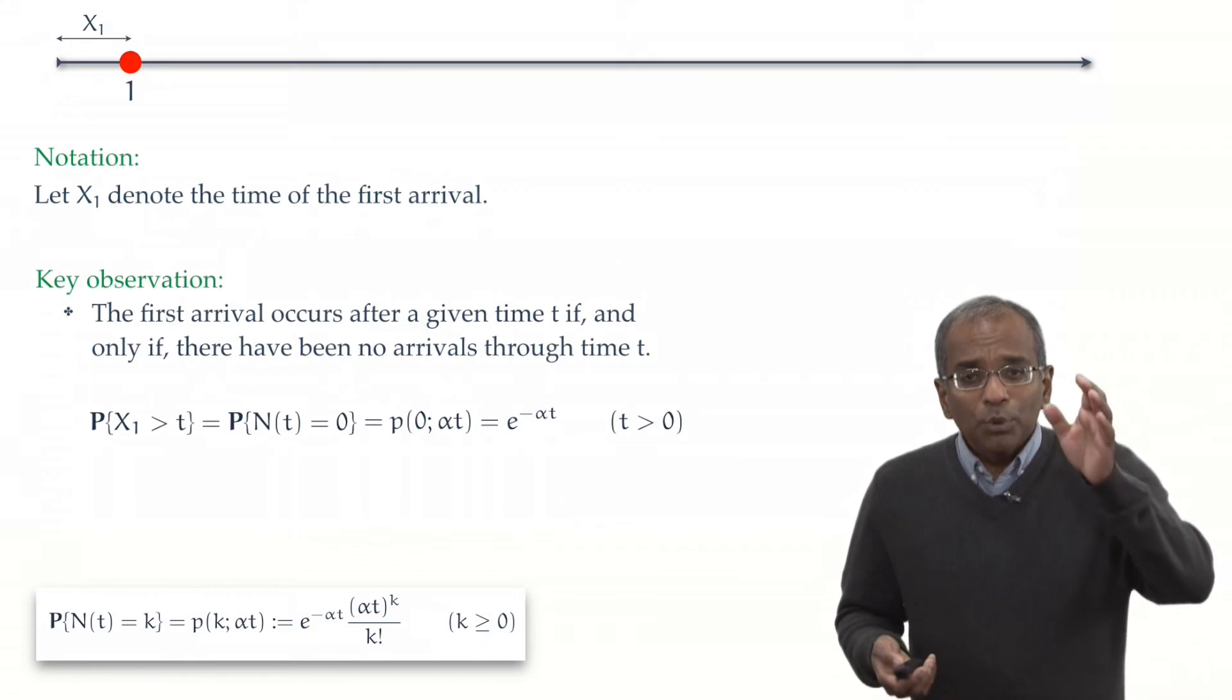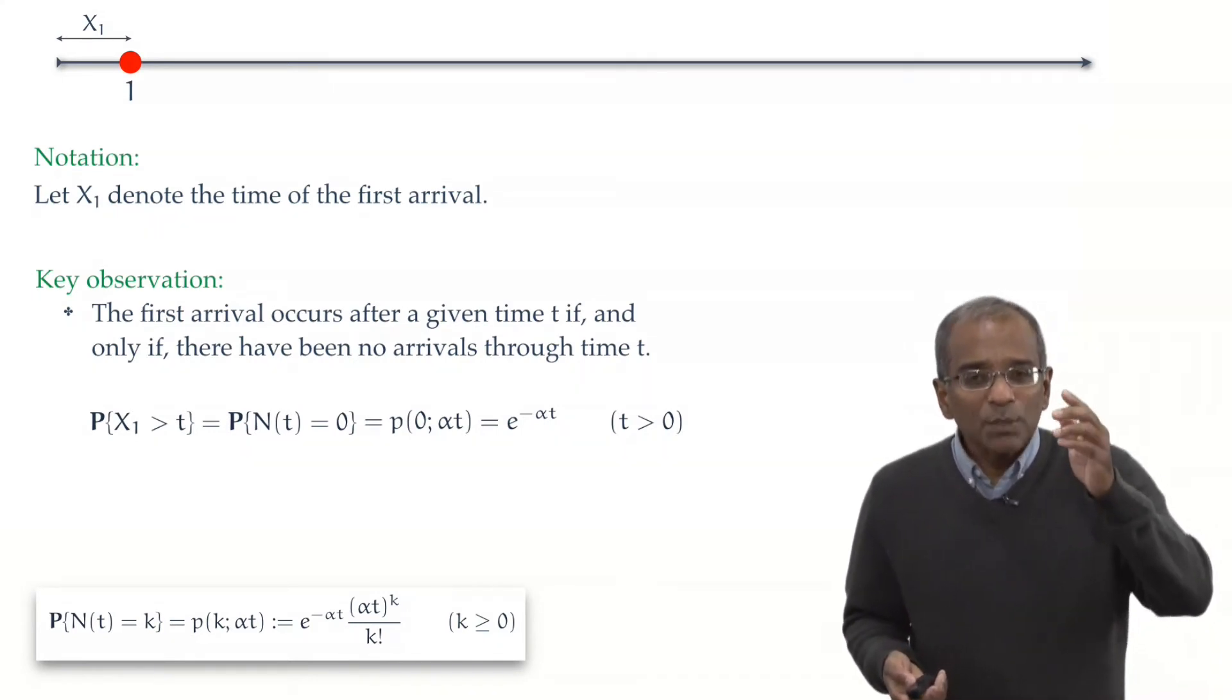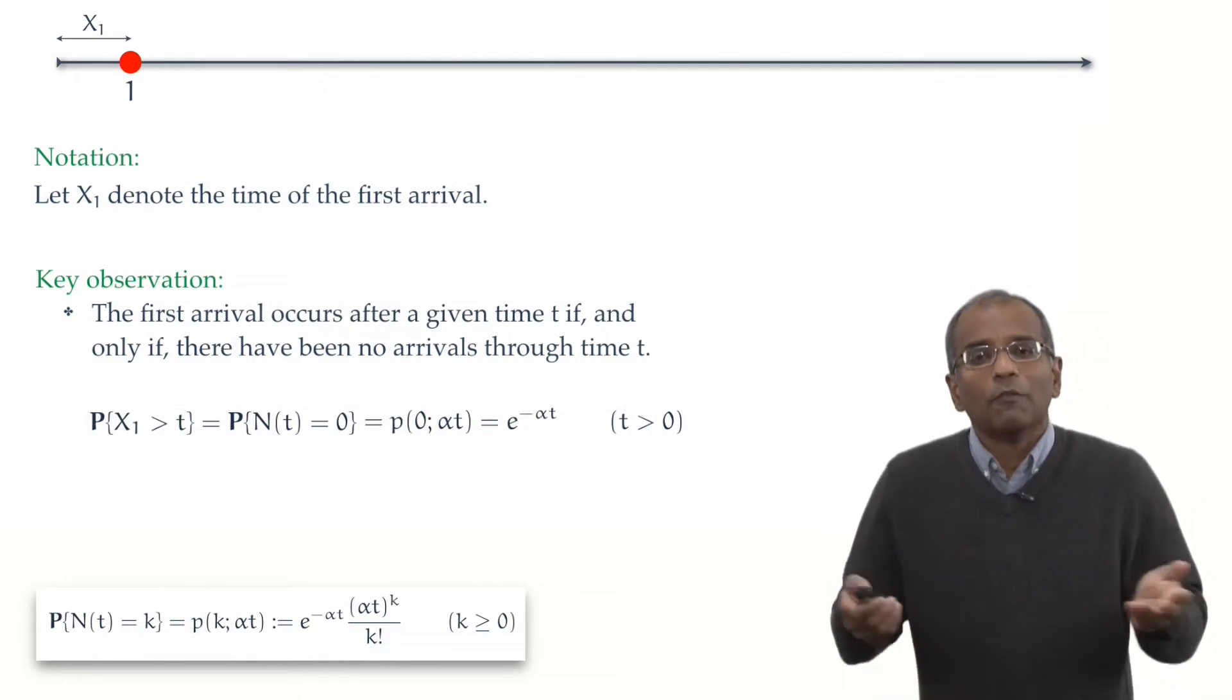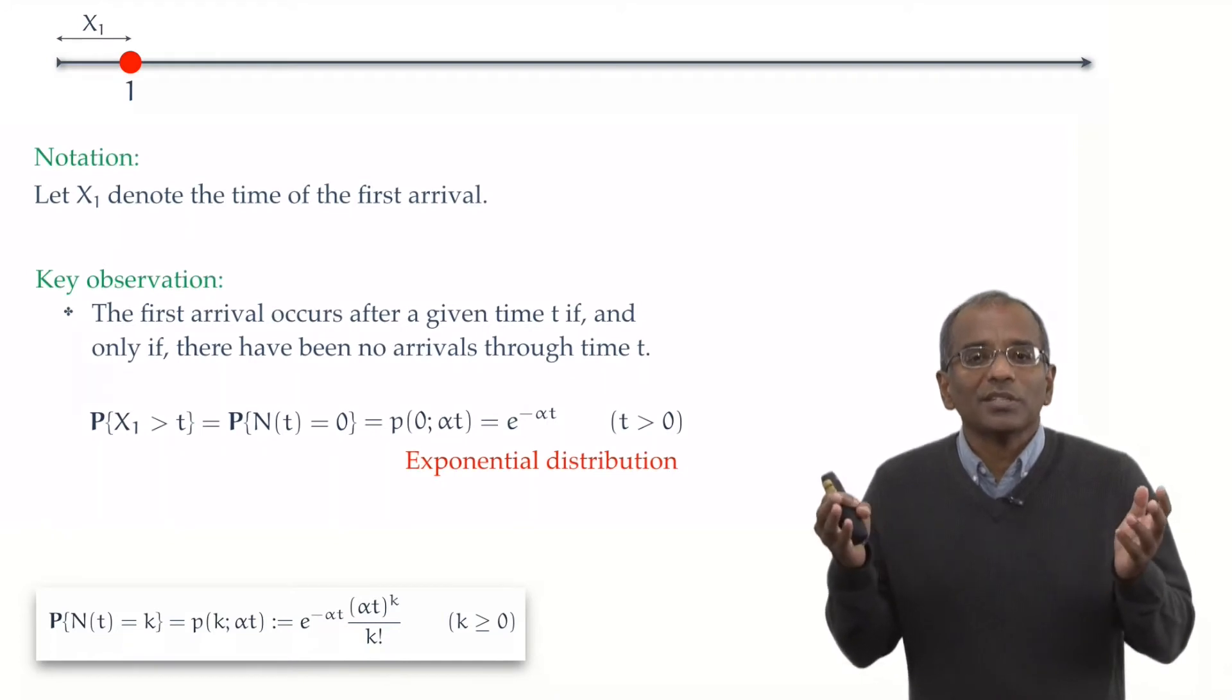Naturally enough, the probabilities decay with time, and they decay exponentially fast, and therefore, in a fit of originality, we call this the exponential distribution.